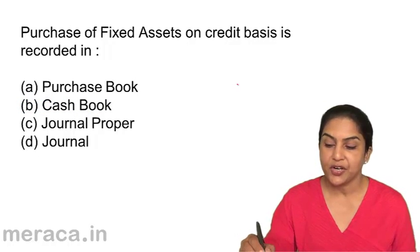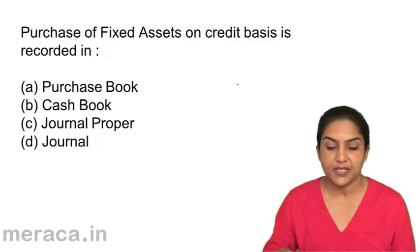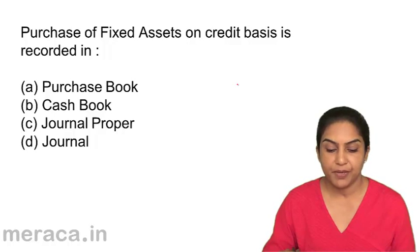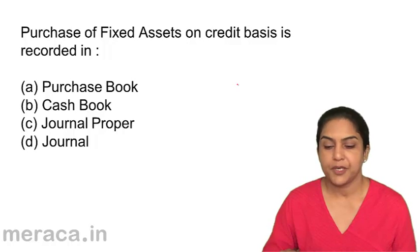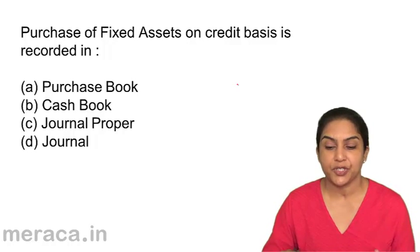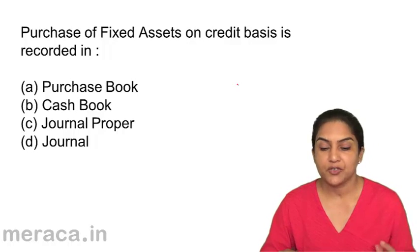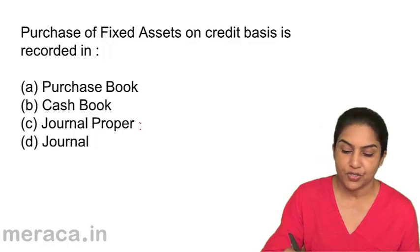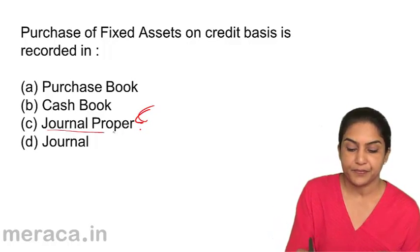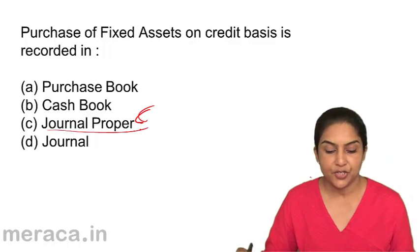Purchase of fixed assets on credit basis is recorded in: a) purchase book, b) cash book, c) journal proper, or d) journal. If purchased for cash, it goes to the cash book. If it were goods, it would go to the purchase book. Purchase of fixed assets on credit basis should be recorded in what is called the journal proper. Correct answer should be c.